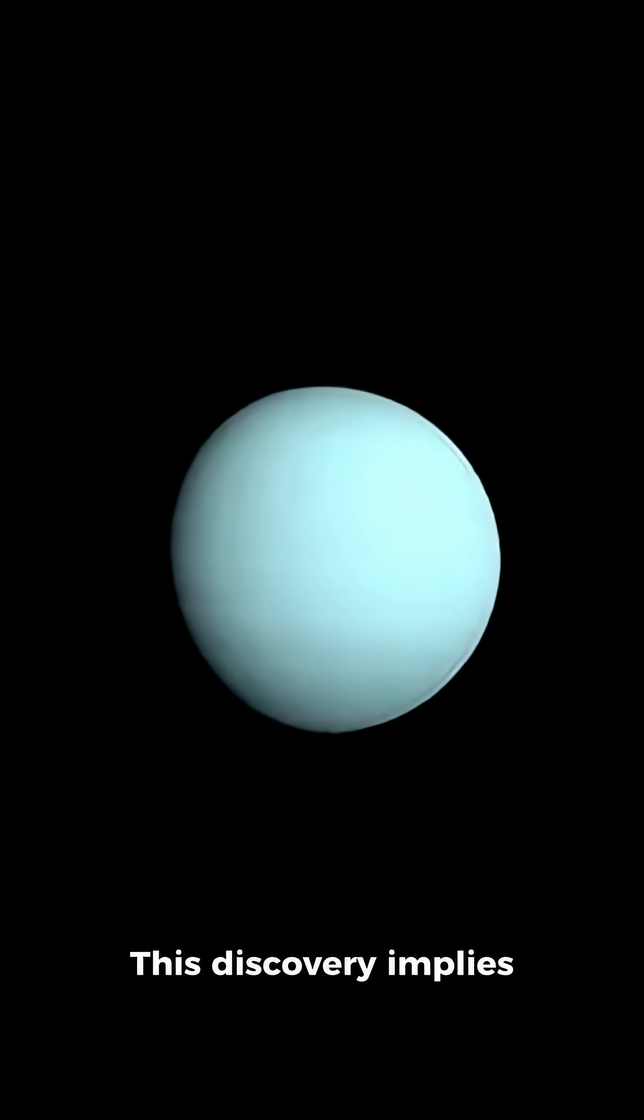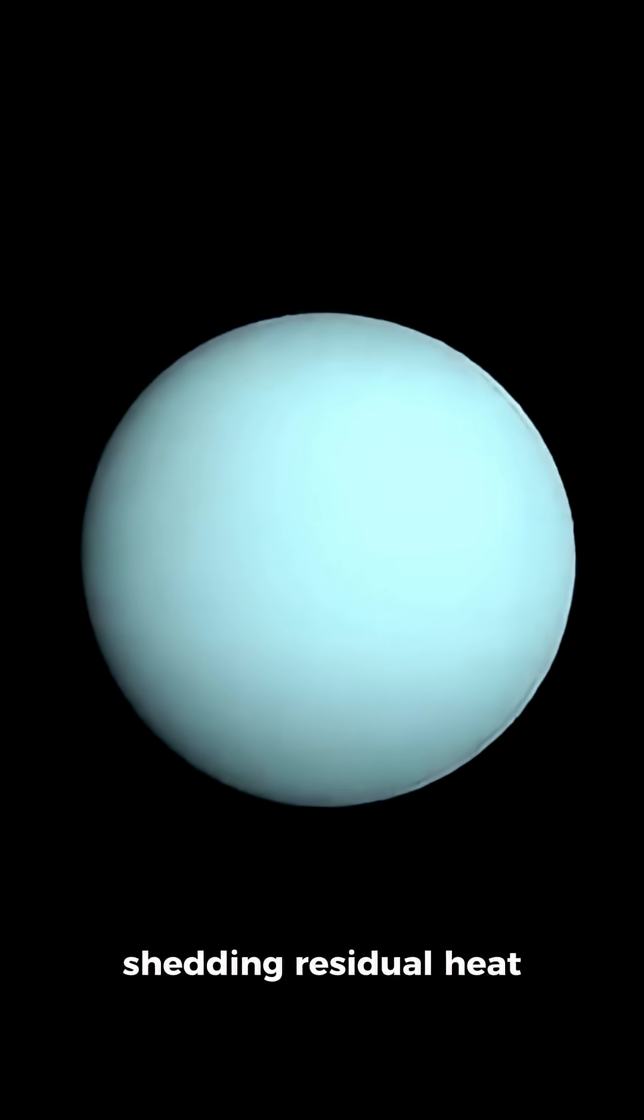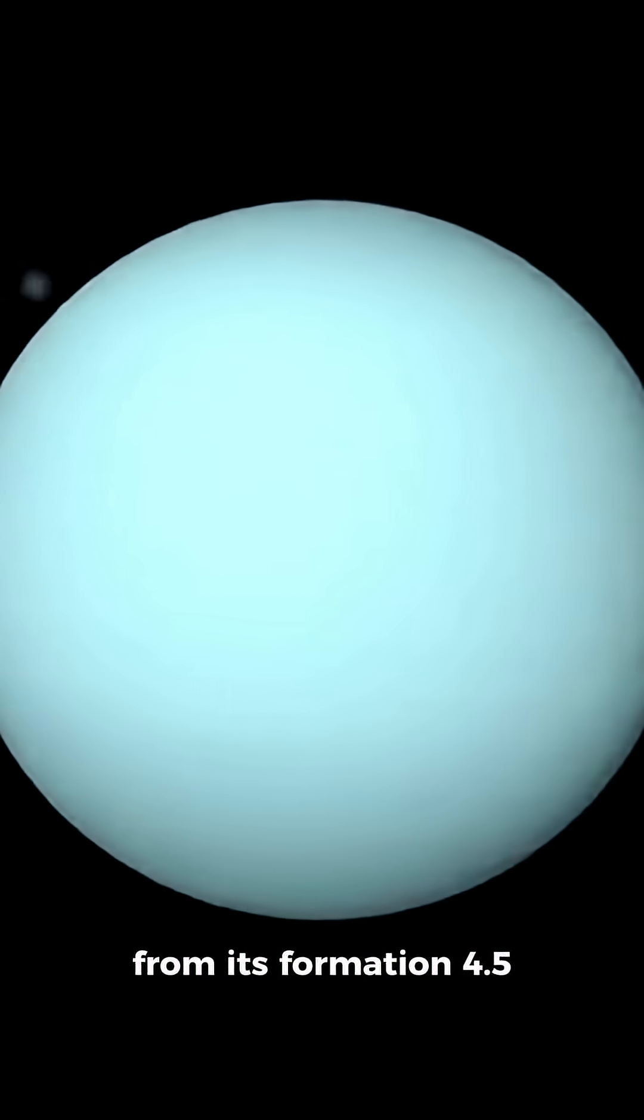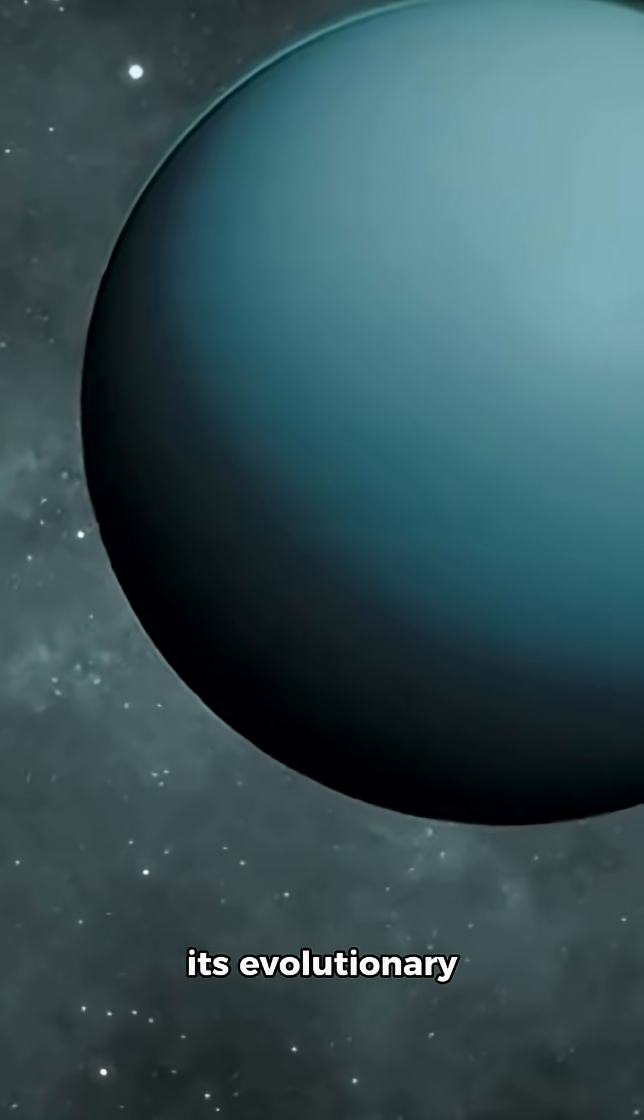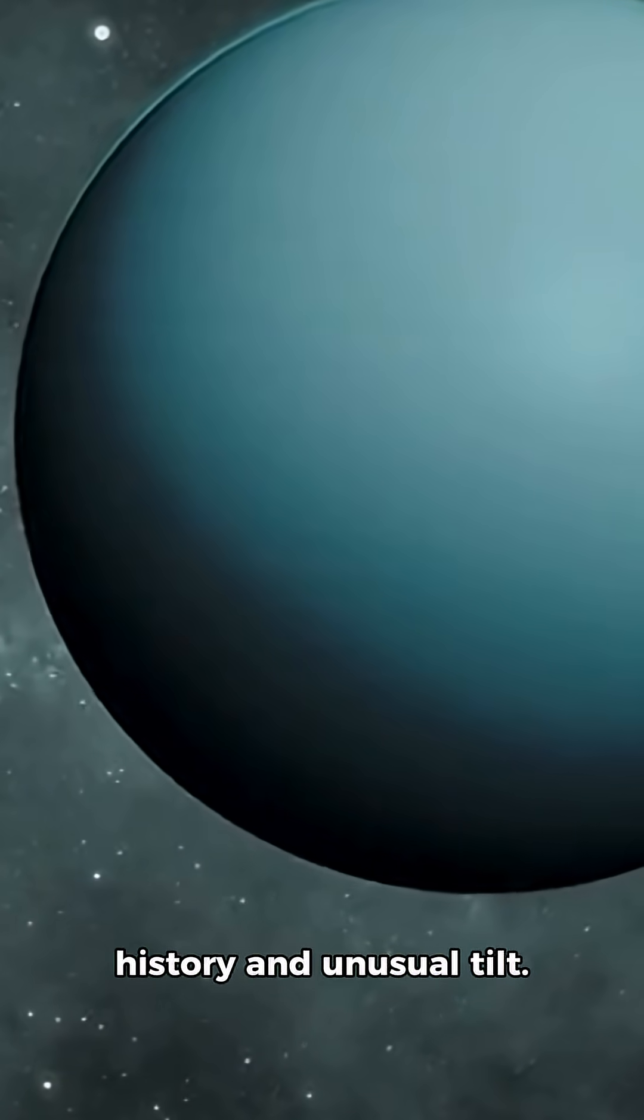This discovery implies Uranus is still shedding residual heat from its formation 4.5 billion years ago. This offers clues to its evolutionary history and unusual tilt.